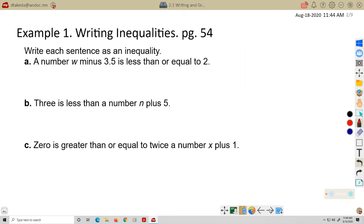Example 1. So this is on page 54 from your textbook. Write each sentence as an inequality. A. A number W minus 3.5 is less than or equal to 2. Okay, so these examples are pretty simple because they break down the inequality symbols into words here. They're basically calling these things by name. So it gets really easy when they do this.